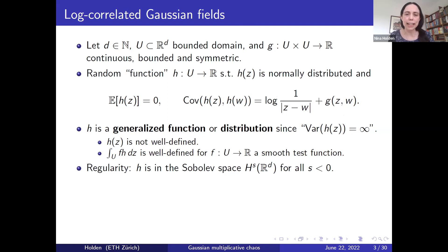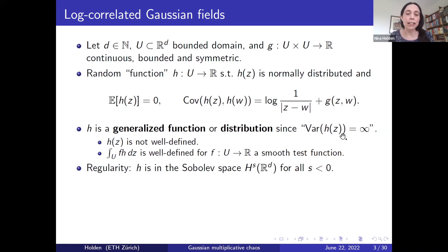From this definition we see that the log-correlated Gaussian field cannot be well-defined as a function, because the covariance between two function values is blowing up logarithmically when the two points approach each other. Heuristically, for any fixed z, h(z) will be a normal random variable with mean zero but with infinite variance. However, it is possible to argue that h is well-defined with probability one as a random distribution or generalized function, meaning that if f is a smooth test function then the integral of f against h is well-defined.